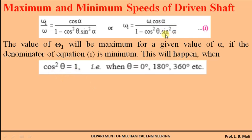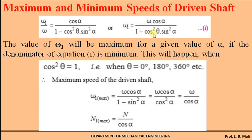Putting cos²θ = 1 in the equation, the maximum speed of the driven shaft is: ω₁_max = ω · cosα / (1 − sin²α). Since 1 − sin²α = cos²α, one cosα cancels, giving ω₁_max = ω / cosα. Using this equation you can find out the maximum speed of the driven shaft. Similarly, replacing ω₁ with N₁, the maximum speed is N₁_max = N / cosα. The speed of the driven shaft is maximum when θ = 0°, 180°, and 360°.